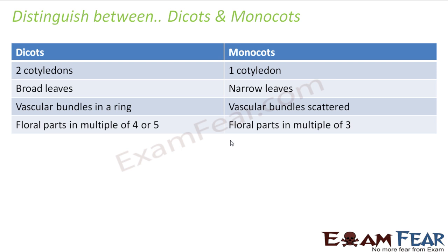The last distinction is between dicots and monocots. Dicots have two cotyledons; monocots have one. Dicots have broad leaves; monocots have narrow leaves. In dicots, vascular bundles are arranged in a ring; in monocots they are scattered. Floral parts are in multiples of four or five in dicots, whereas in monocots they are in multiples of three. This ends the discussion on Kingdom Plantae.